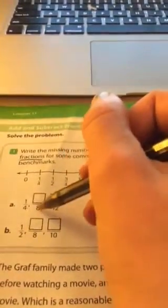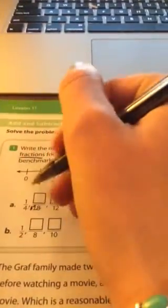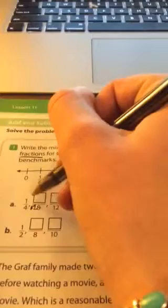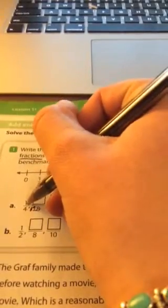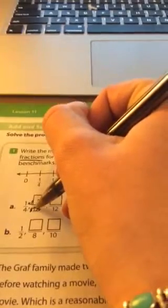4 times what number gives me 8? 4 times 2. If I multiply the denominator by 2, I also have to multiply the numerator by 2 to get 2, 2 eighths.